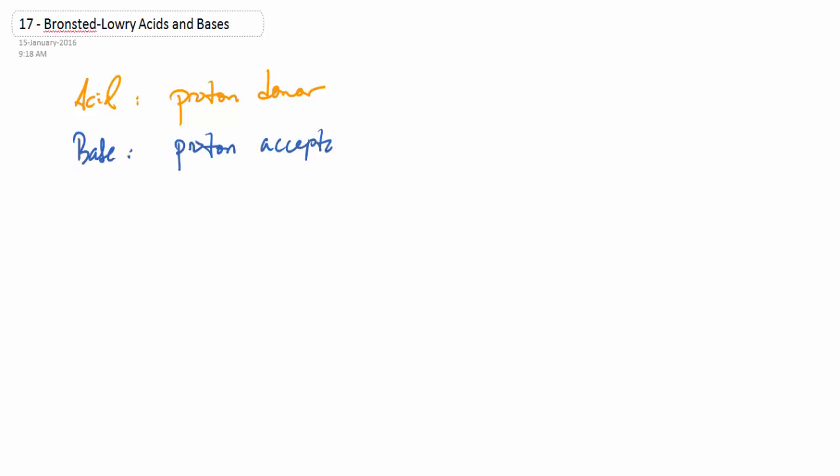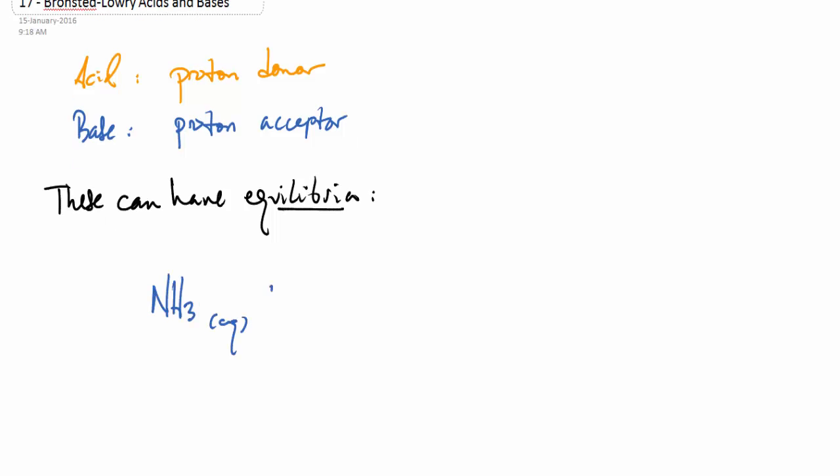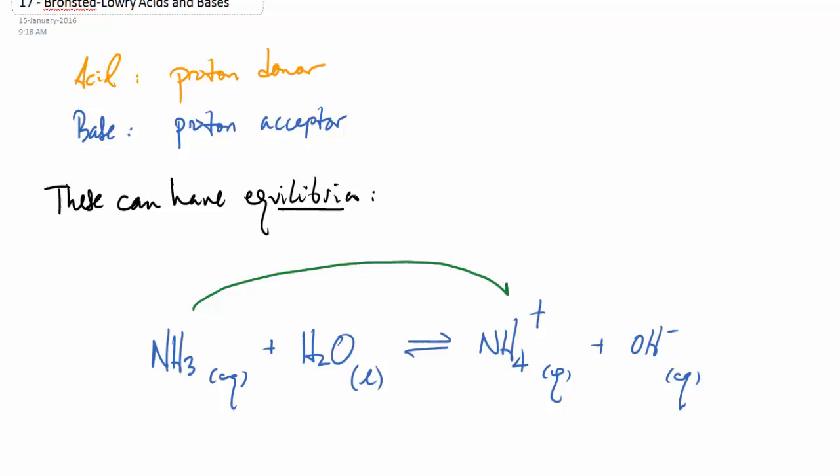Remember that acids are proton donors and bases are proton acceptors. So acids and bases can have an equilibrium behavior that looks like this one. Here we have ammonia, which will be acting as a base, with water, which will be acting as an acid. This makes an equilibrium with the ammonium ion and hydroxide.